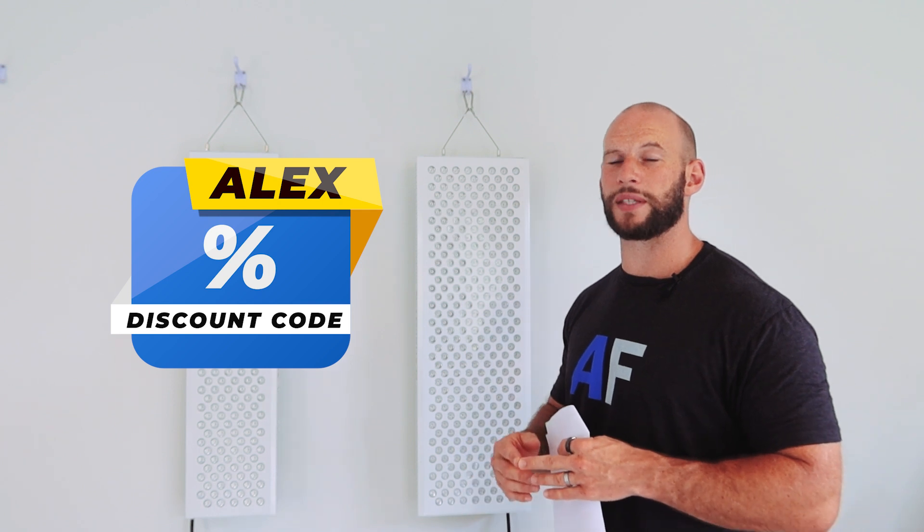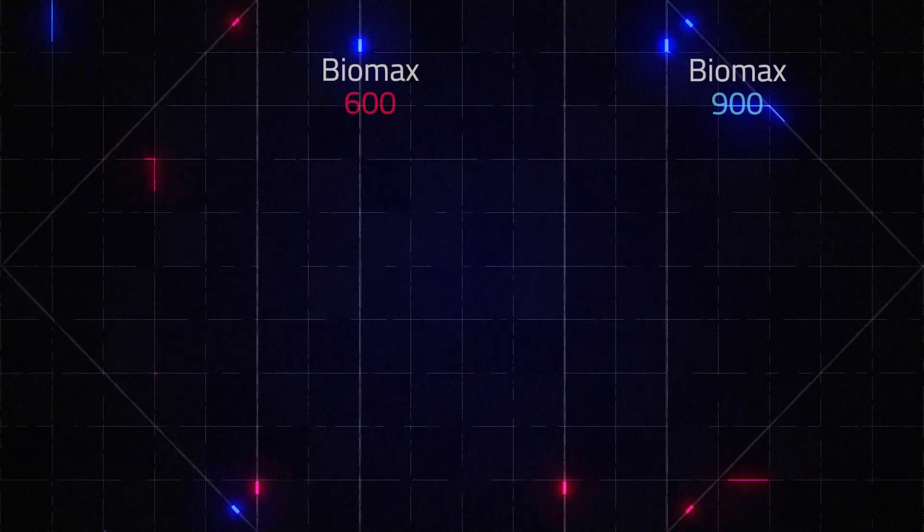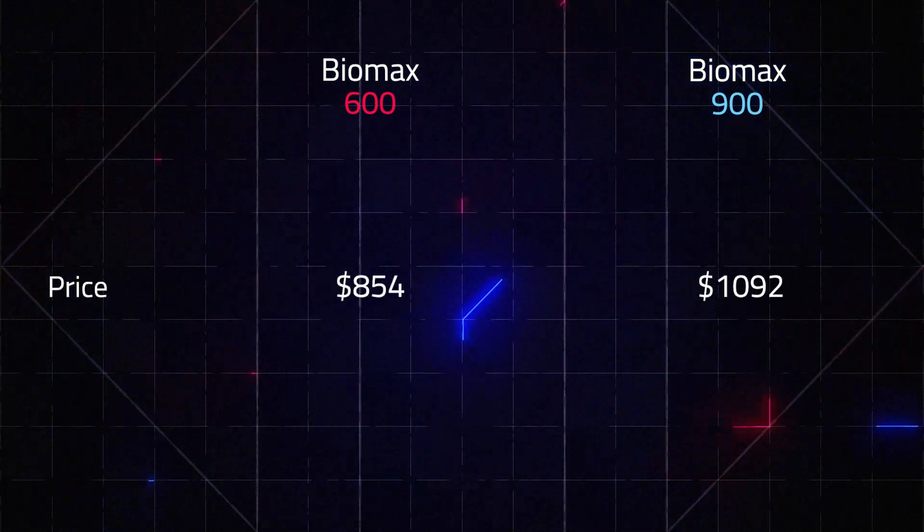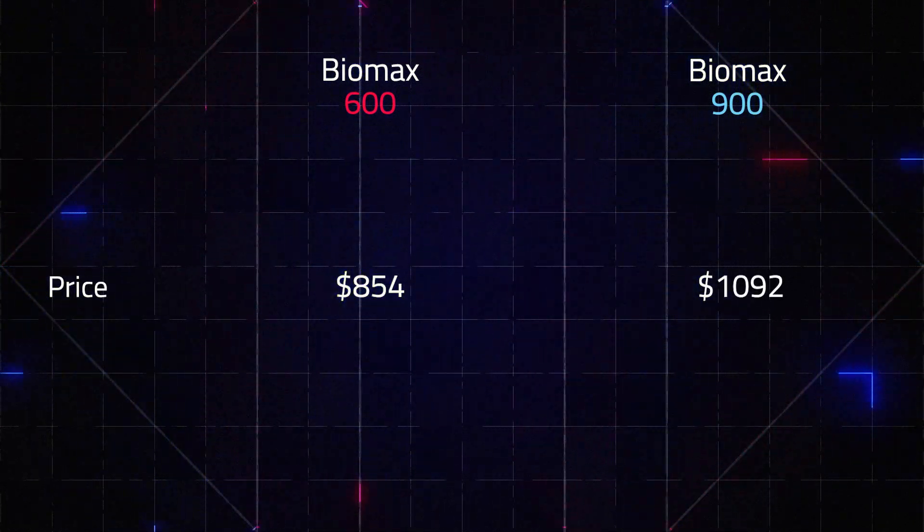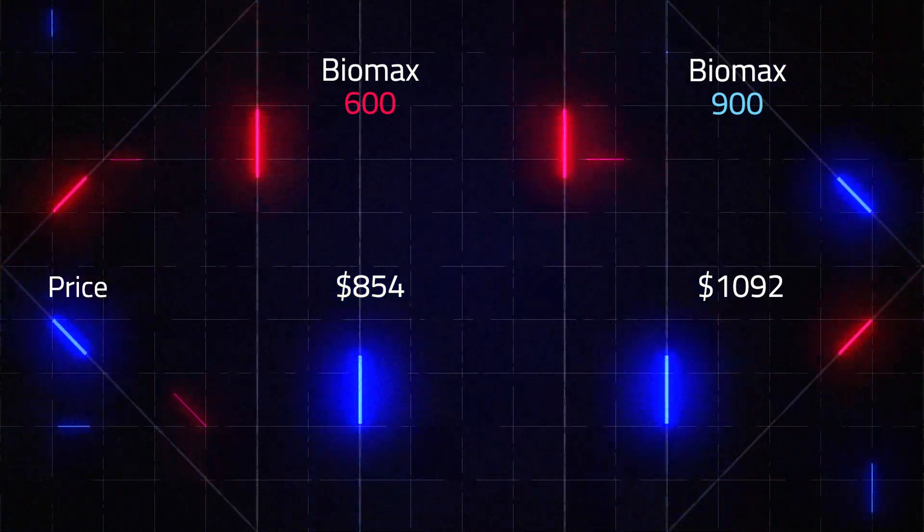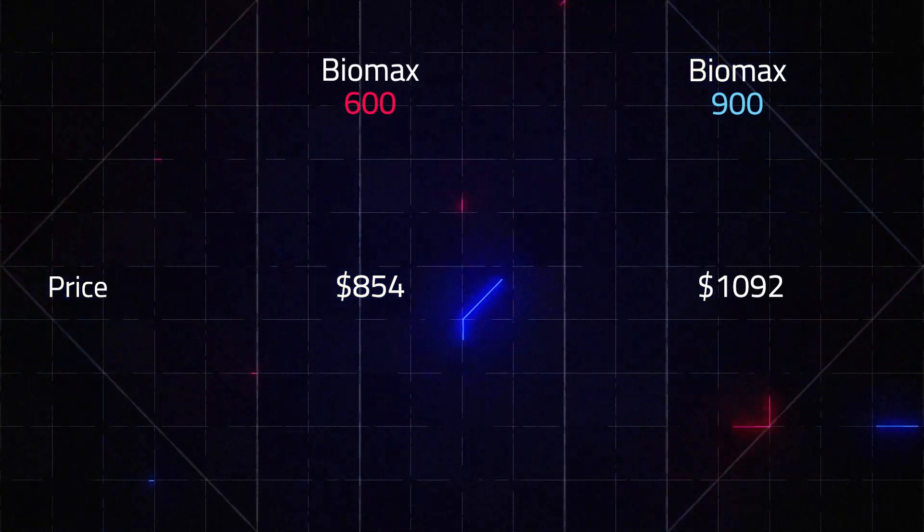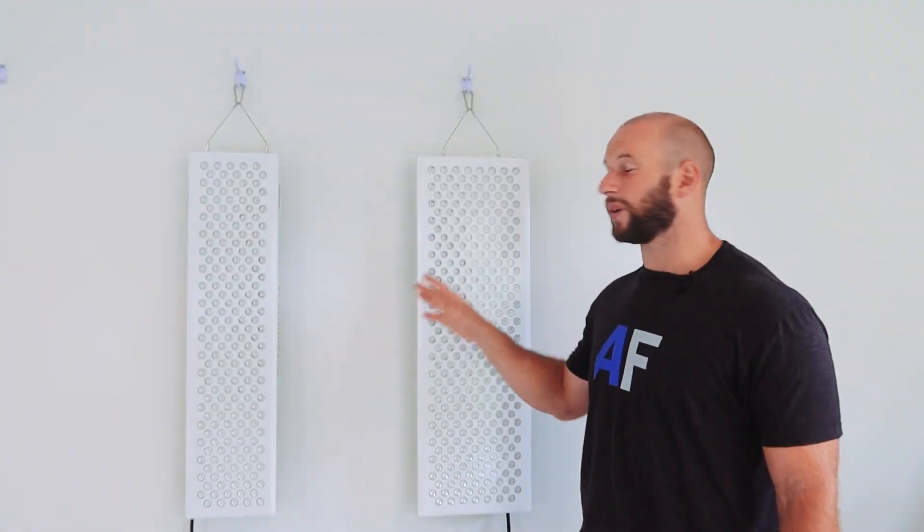When it comes to price, you can use discount code ALEX and you'll save 5%, so I'm going to use this discounted price when I'm comparing these panels. The Biomax 900 comes in at a discounted price of $1,092 US. The Biomax 600 comes in at a discounted price of $854, so that's about a $200-$240 difference.